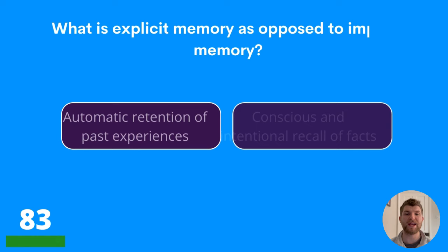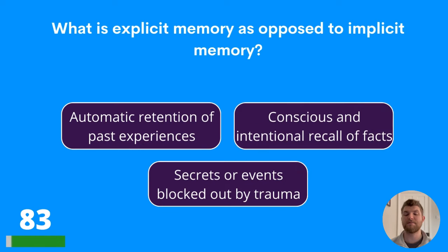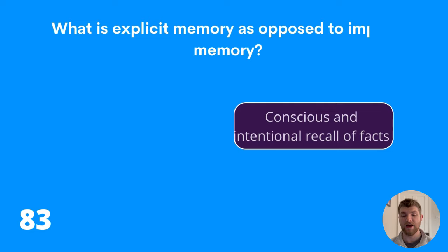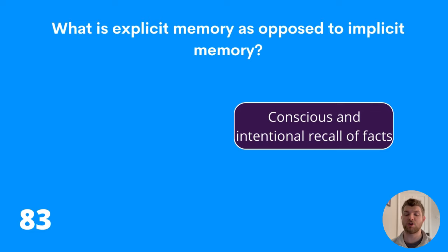Question eighty-three: what is explicit memory, as opposed to implicit memory? Automatic retention of past experiences, conscious and intentional recall of facts, or secrets and events blocked out by trauma? The answer is conscious and intentional recall of facts.